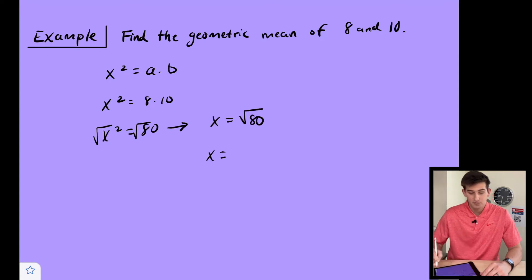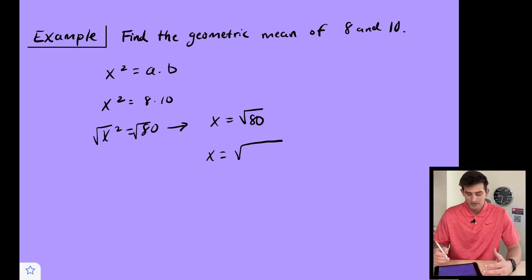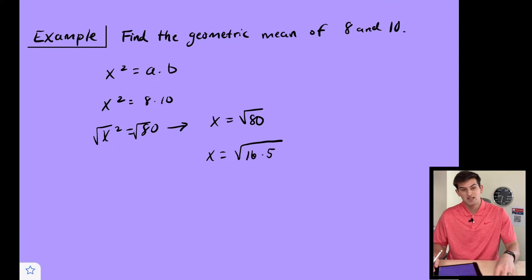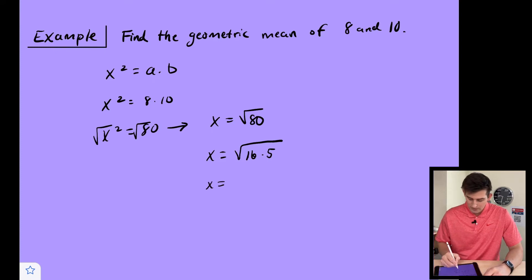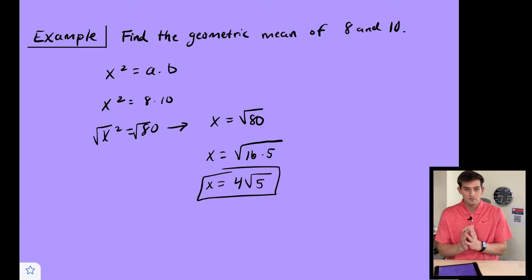Now we want to simplify the square root of 80 by finding its perfect square factors. Since 16 times 5 is 80, we can simplify because the square root of 16 is 4. So we pull that out and get 4 root 5. Our geometric mean is 4 root 5.